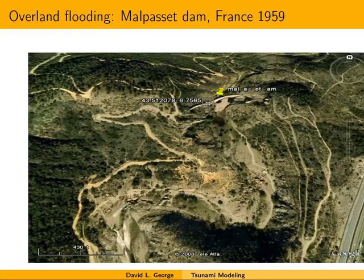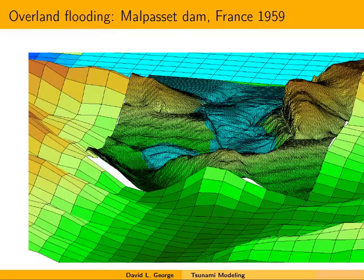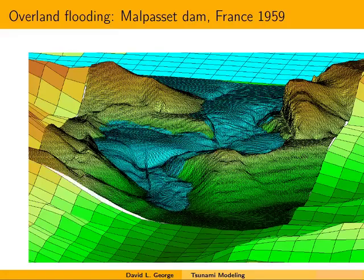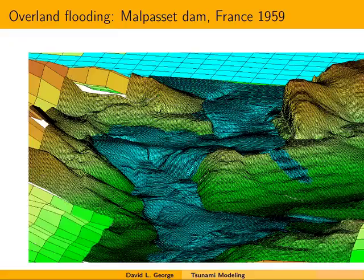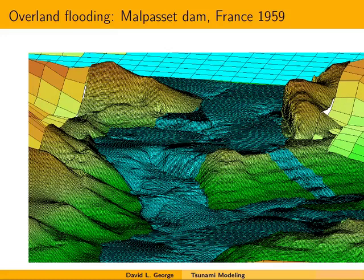This is a Google Earth view showing where the dam sat, with the reservoir behind it and a bend in the ravine below. We start with a fairly coarse grid and then follow the flood with higher resolution grids. The solution uses just the shallow water equations — a fairly crude model for something like this — but they do tend to work surprisingly well when compared to the field data.